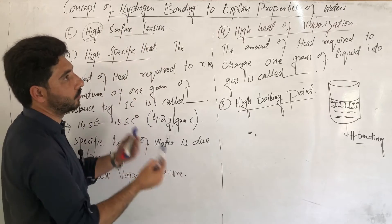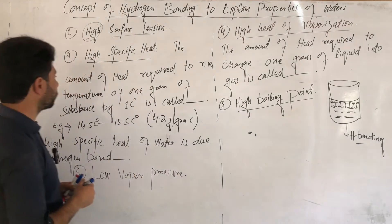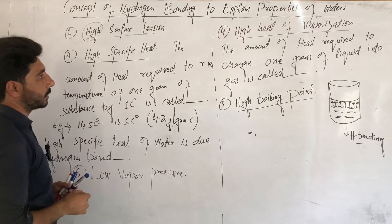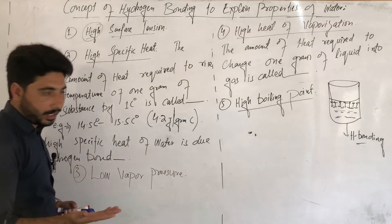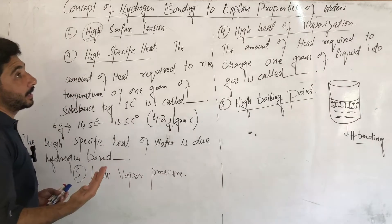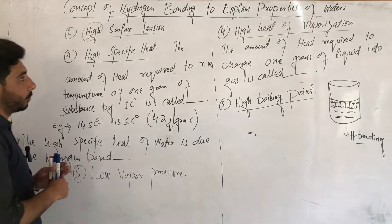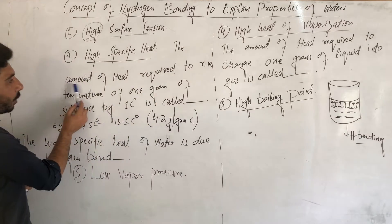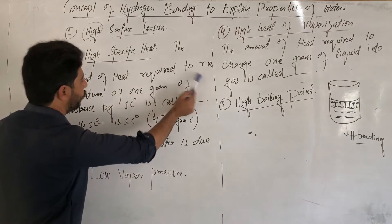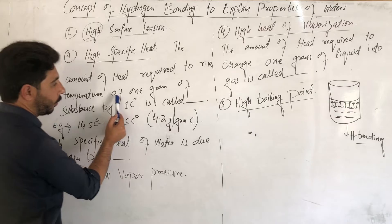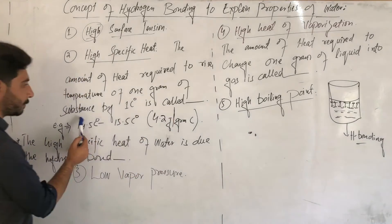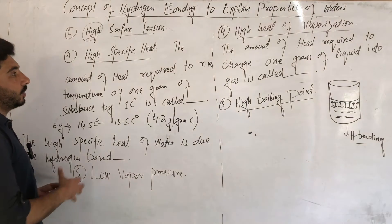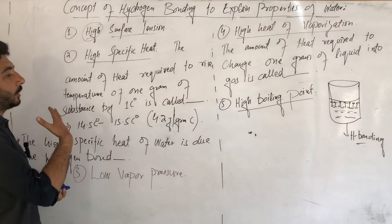So, surface tension in water is high due to hydrogen bonding. Now, the second property: high specific heat of water. Do you know what high specific heat means? Let's discuss the definition of high specific heat.